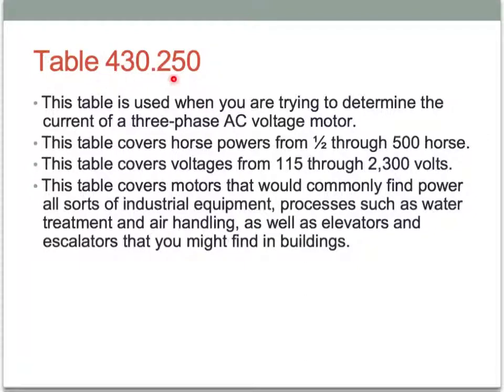Table 430.250 is going to have quite a bit more information. It's got a lot more selection — with the popularity of three phase power and manufacturing in the United States, we need many options. We have horsepower options all the way from a half horse to 500 horsepower, across voltages from 115 all the way up to 2,300 volts.